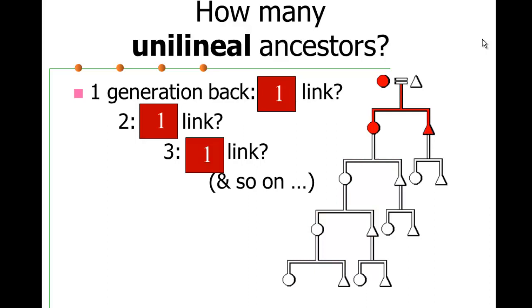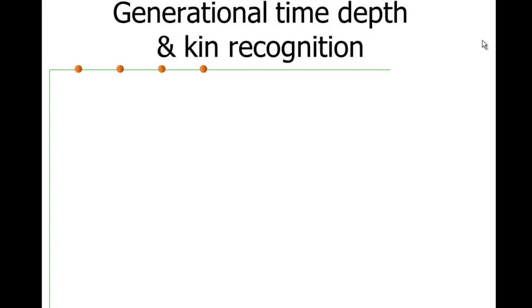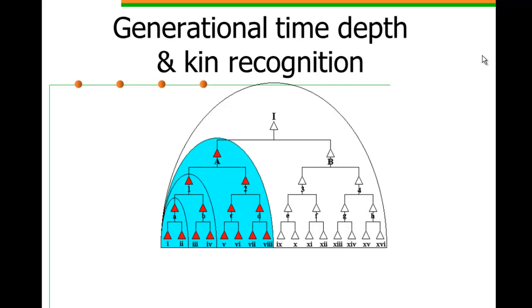You can go back a lot more links in the chain unilineally. And so you have greater depth genealogically. But you're following fewer possible links. So we noted earlier there's this connection between time depth and kin recognition. And this is really important. If kin recognition is significant in human societies, we have to inquire into systems of ancestry.